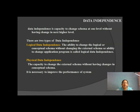Data independence always comes with database architecture. Data independence is the capacity to change the schema at one level without having to change the next higher level. It is an ability where changes made at one level of a schema do not affect or impact the next higher level. Data independence is of two types: logical data independence and physical data independence.